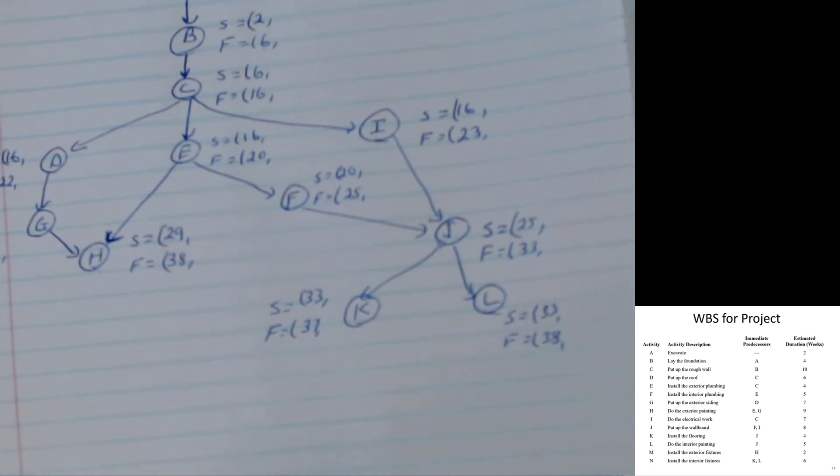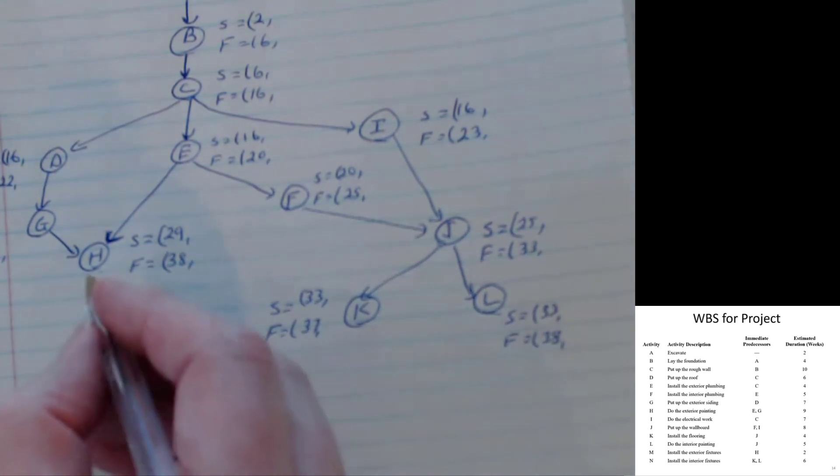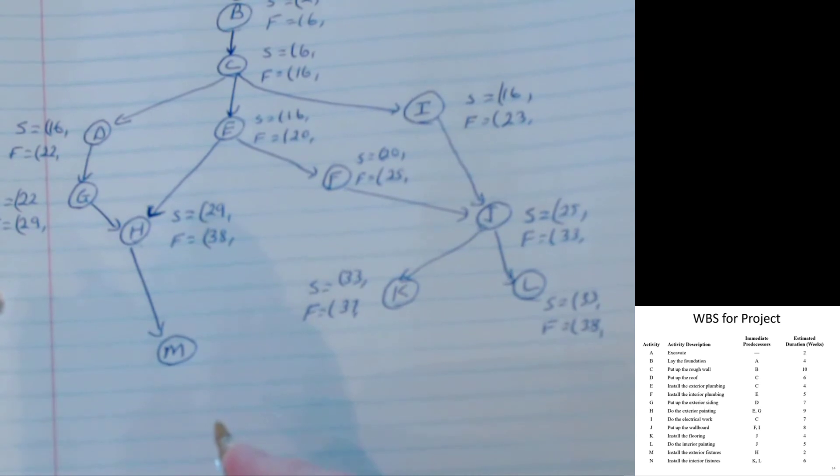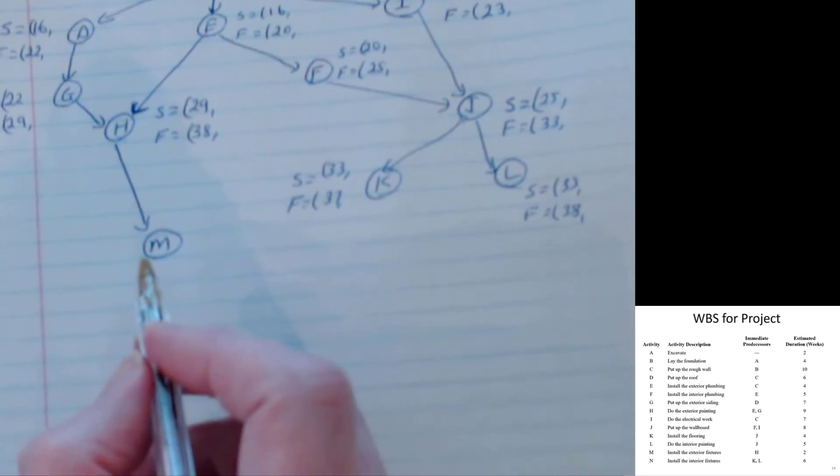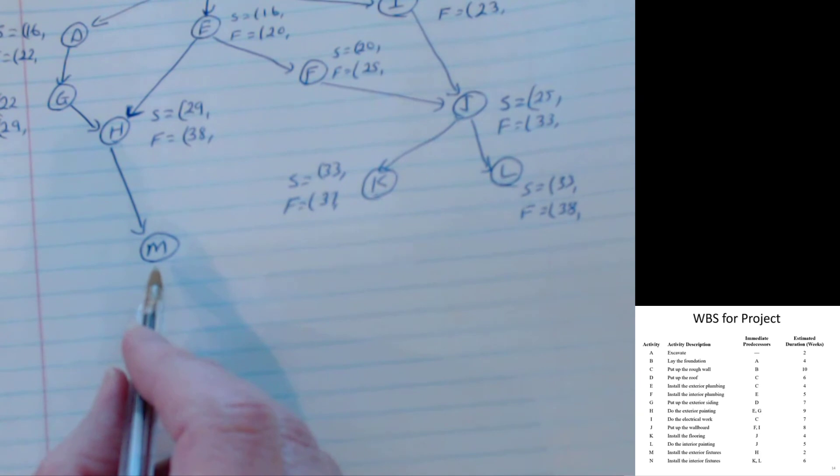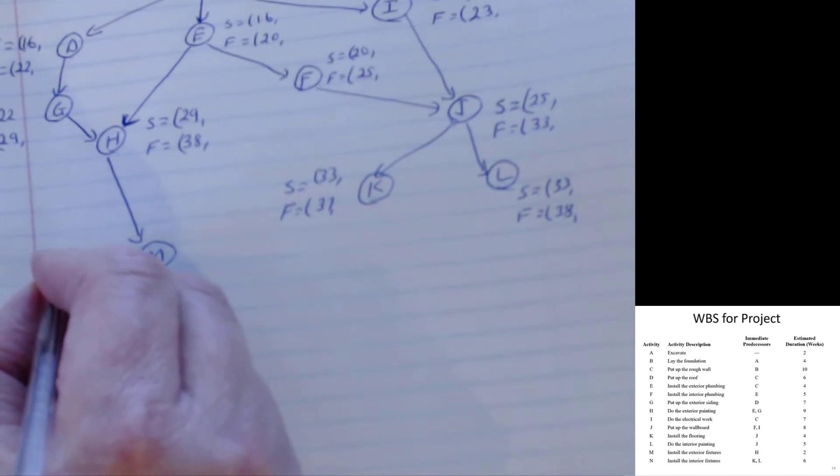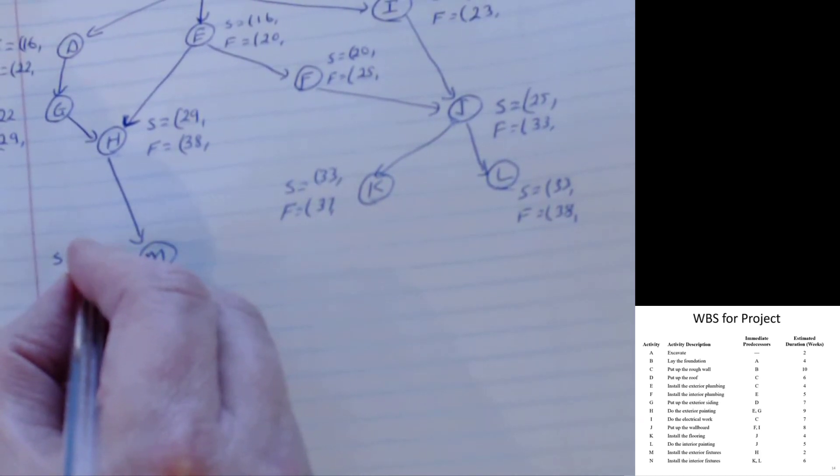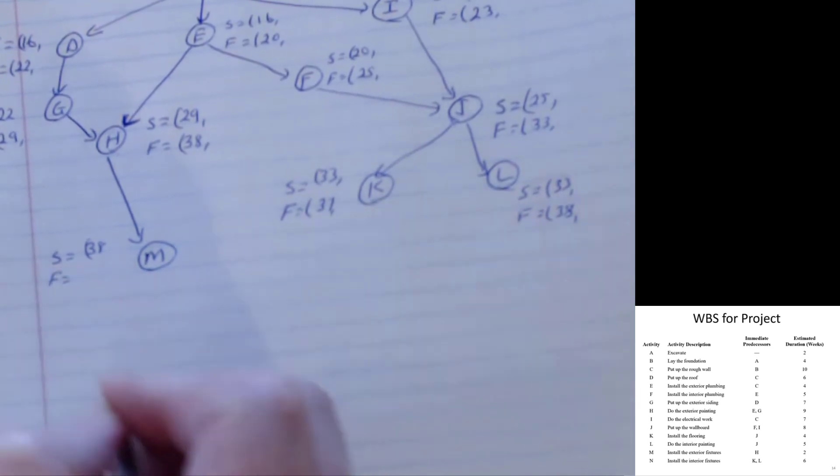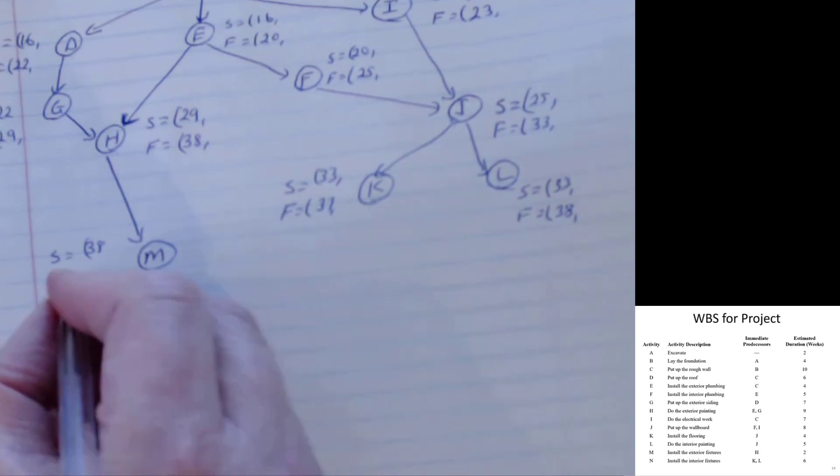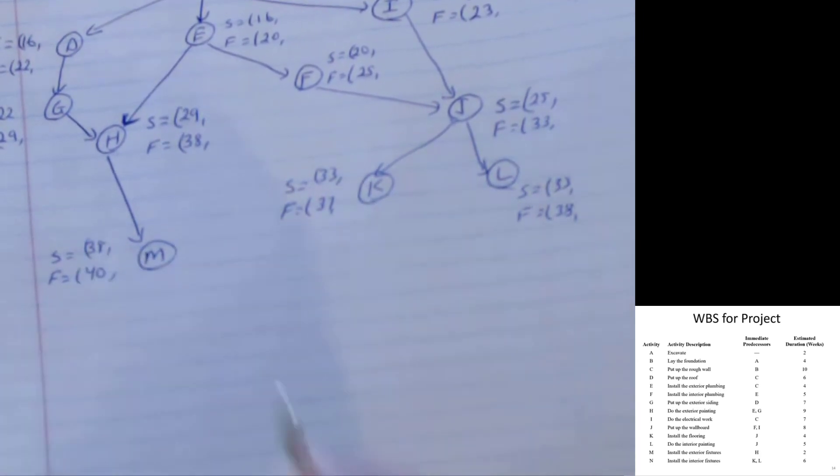Almost done, almost done, getting towards the end. M only depends on H. So you can draw a line to M. So I've got M there coming out of H. Looks like M doesn't need anybody else. Start time for M is whenever H is done, which is period thirty-eight. Finish time for M, how long does M take? Two weeks. So two plus thirty-eight, M can be done in week forty. Looks like nobody depends on M.